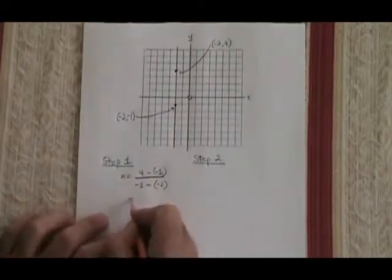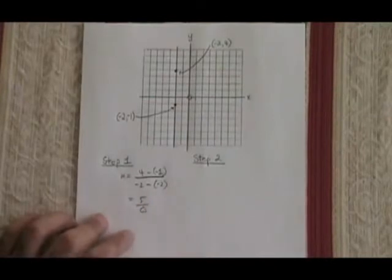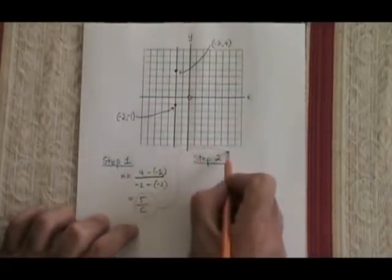Simplifying this, 4 minus negative 1 is 5. Negative 2 minus negative 2 is 0. I have an undefined slope, but I still have a slope in the form of a fraction, and I can still use it for step 2.